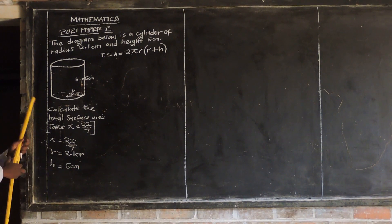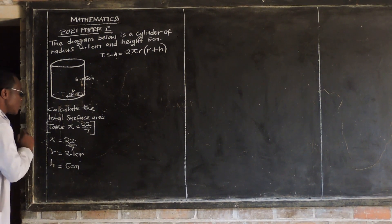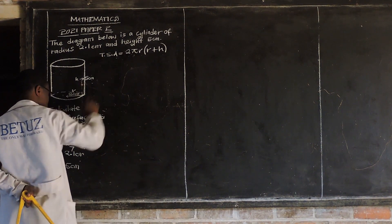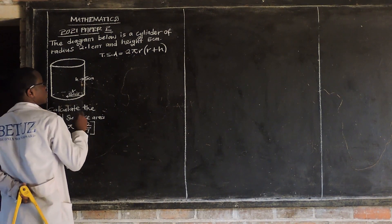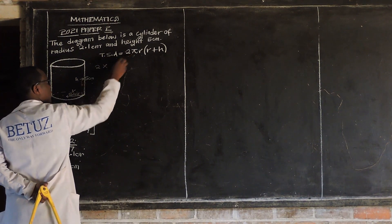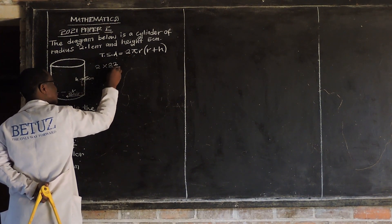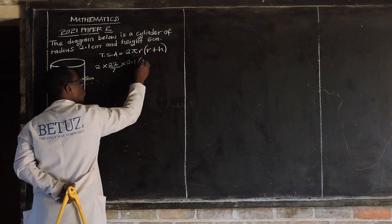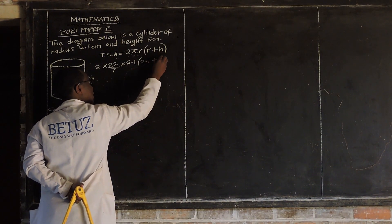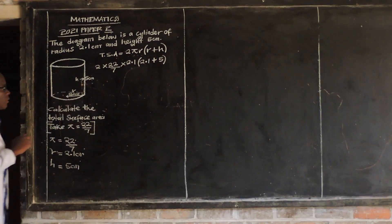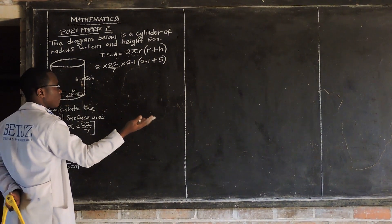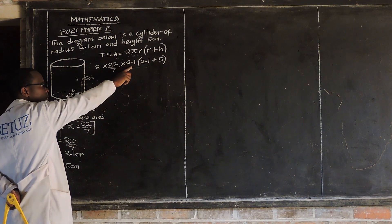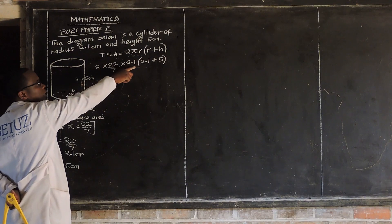We have everything needed to find the total surface area of this cylinder. Just substitute: where there is pi, put 22 over 7; where there is radius, put 2.1; where there is height, put 5. So it's 2 multiplied by 22 over 7, multiplied by 2.1, then open brackets: 2.1 plus 5. Now, 7 can go into 2.1 — that gives 0.3.